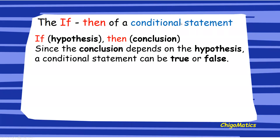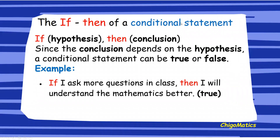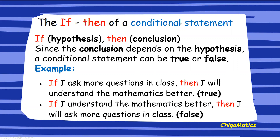Since the conclusion depends on the hypothesis, a conditional statement can be false or true. For example: if I ask more questions in class, then I will understand the mathematics better — that is true. But if I understand the mathematics better, then I will ask more questions in class — that is false, because once you understand the maths you are not going to ask more questions.